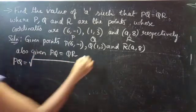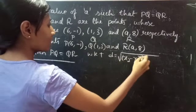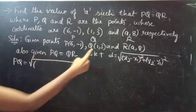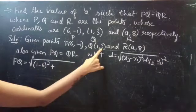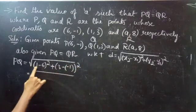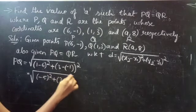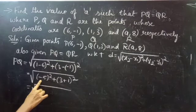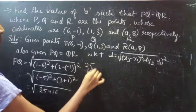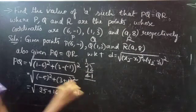So PQ equals square root of — since we know that distance D is given by √((X2−X1)² + (Y2−Y1)²) — PQ equals √((1−6)² + (3−(−1))²), which equals √((−5)² + (4)²), so √(25 + 16) = √41.